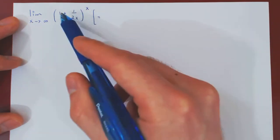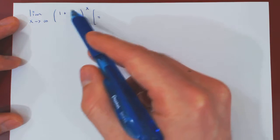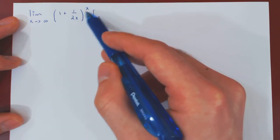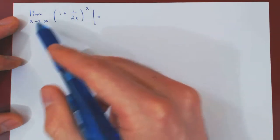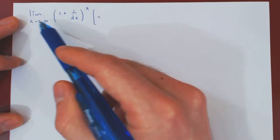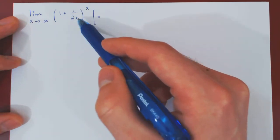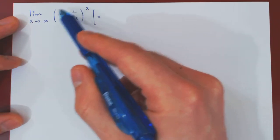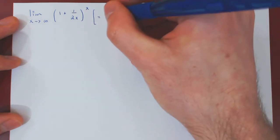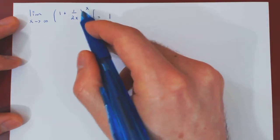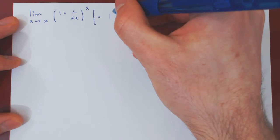There are two parts of the expression here. There's the base, 1 plus 1 over 2x, and the exponent, which is x. If we look at the base first, as x tends to infinity, 1 over 2x goes to 0, so the base will be approaching 1, and the exponent, clearly, will be approaching infinity.